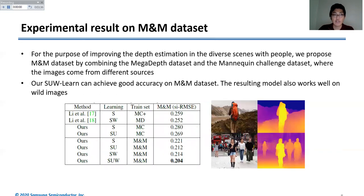We also evaluate the robustness on other domain images that are totally different. We use the M&M dataset, where images come from MegaDepth and the Mannequin challenge. They are from totally different sources and also have a lot of people. We can see that our SUW-Learn still has very good accuracy and works well on wild images. Thank you.